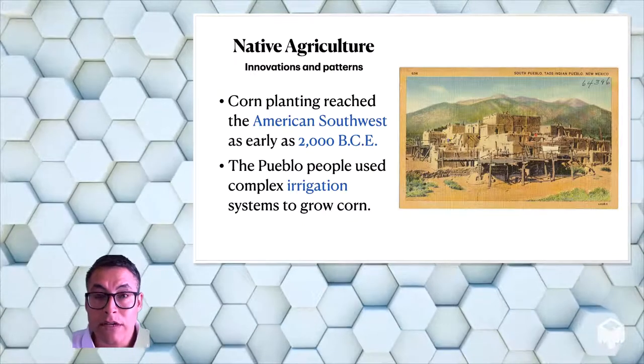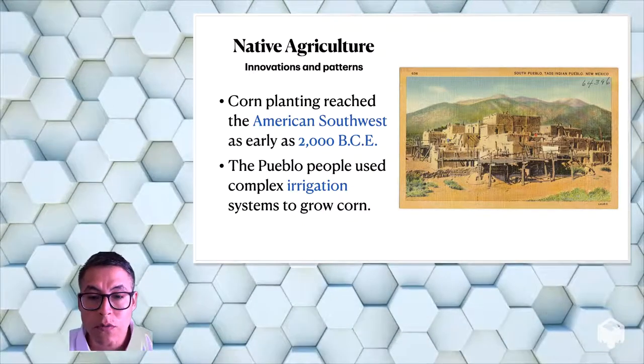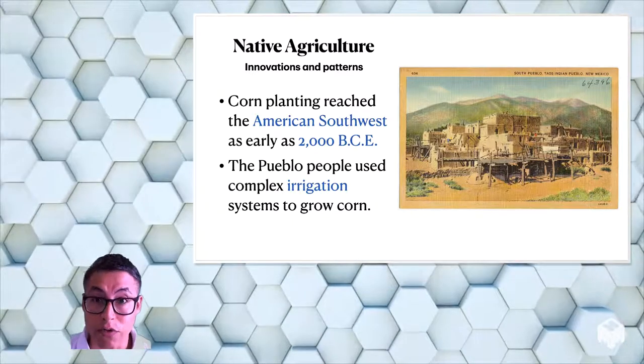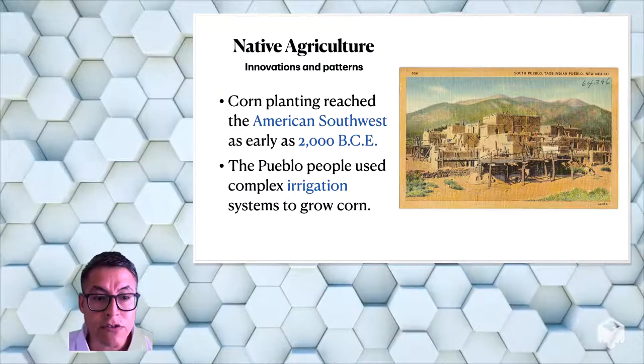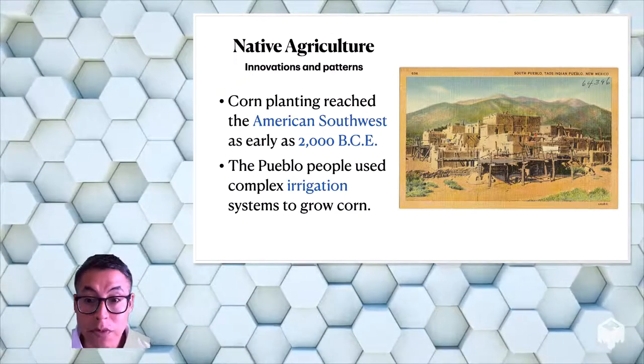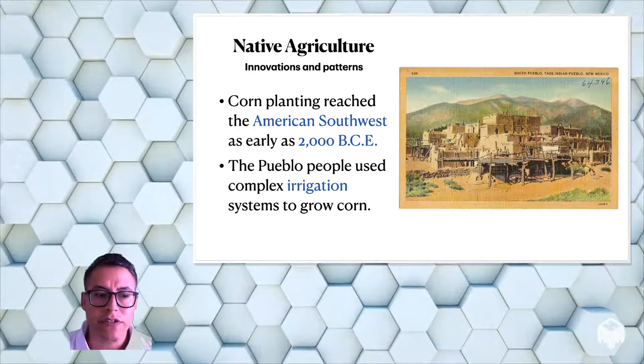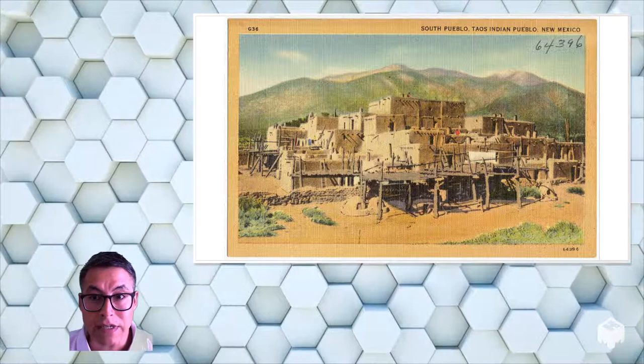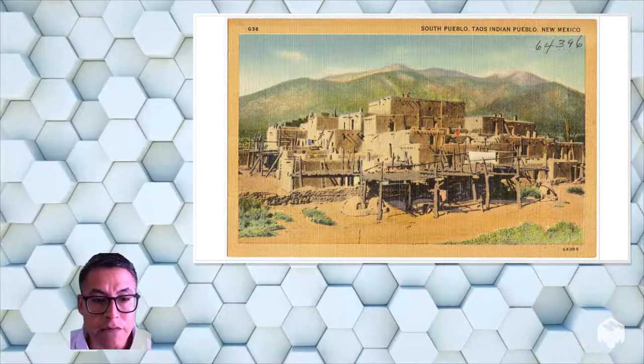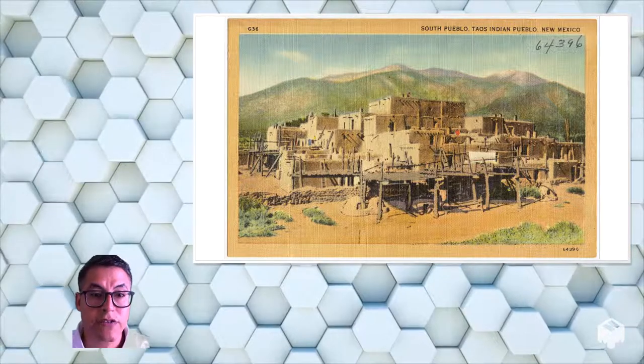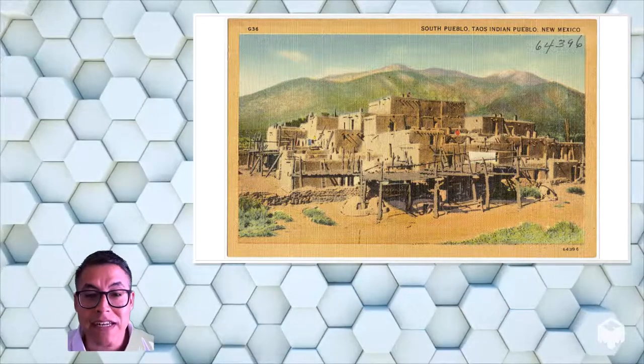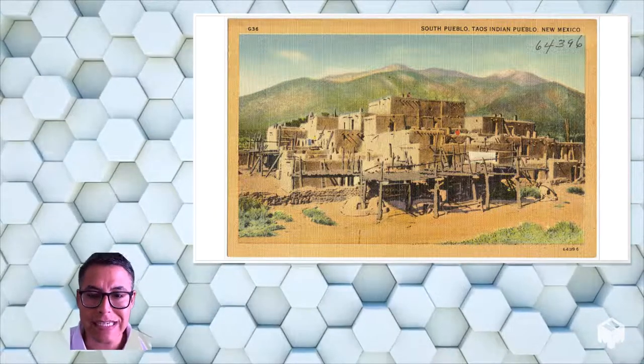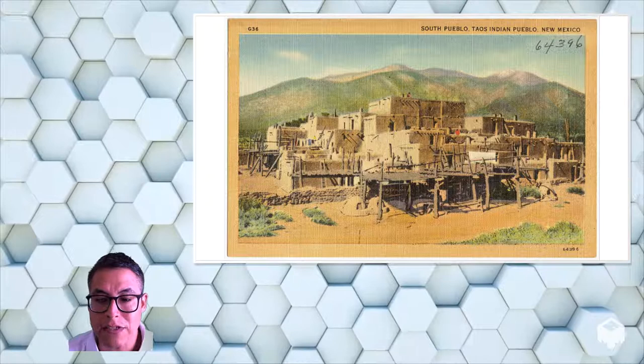Now in what is now southern New Mexico, what is the southwest of the United States, corn planting arrived there as early as 2000 before the Common Era. So 2000 years before the birth of Christ. The Pueblo people that lived there used irrigation systems to grow their corn. So this is a Pueblo settlement there in what is now Taos, New Mexico. And a lot of these people established their homes in the desert using mud and wood and any little material they could find naturally. So a lot of these complex cities, like the one you see here, were established in that way.